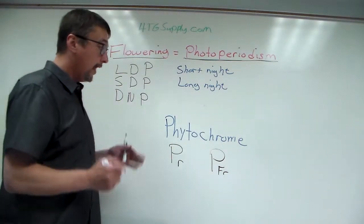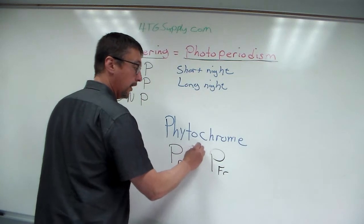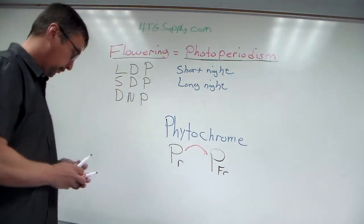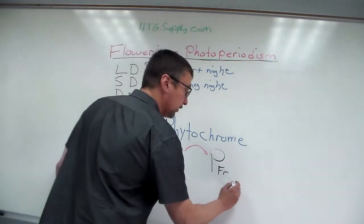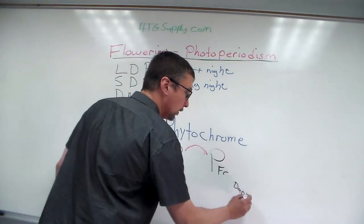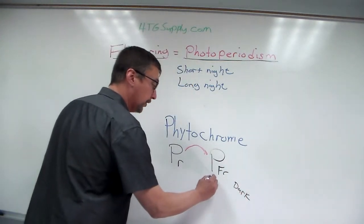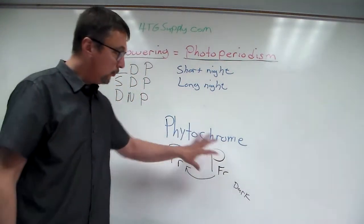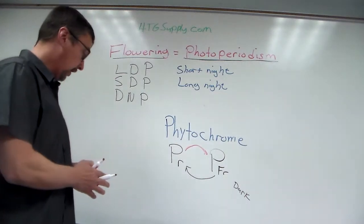Now when plants have red light, that causes the phytochrome red to be turned into phytochrome far red. And when plants are in the dark, the phytochrome far red will be converted back into phytochrome red. And it is the ratio of these two molecules that determine flowering.